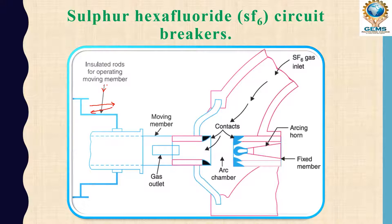When we want to switch on, this rod will push the moving contact forward; to switch off it goes back. This is the moving member. The gas outlet is where we can remove the gas from the chamber.